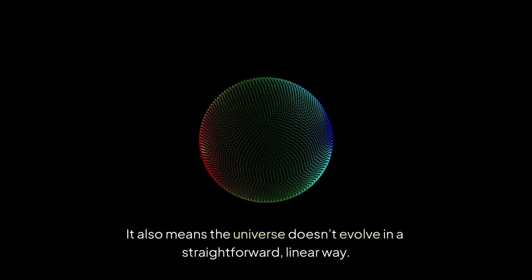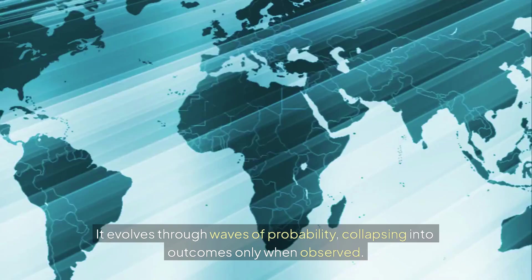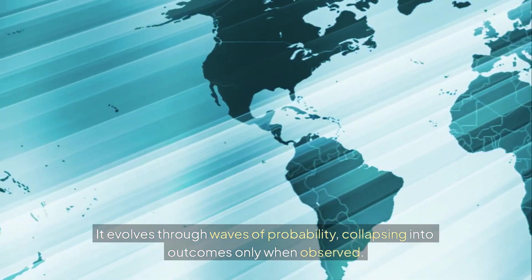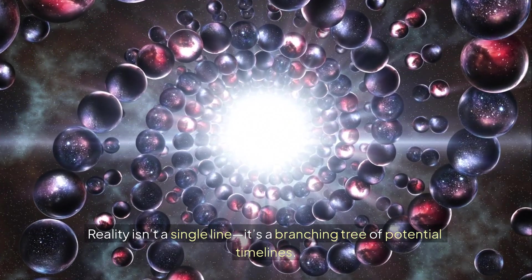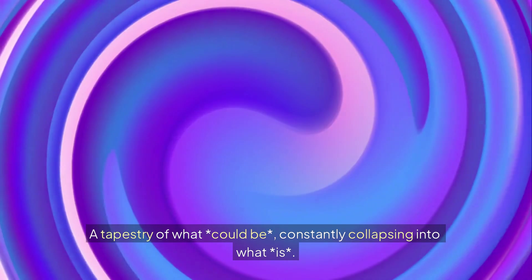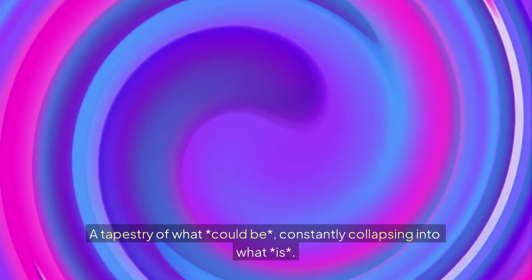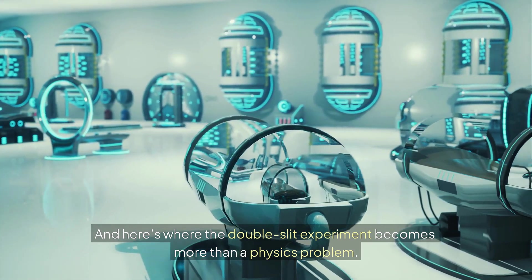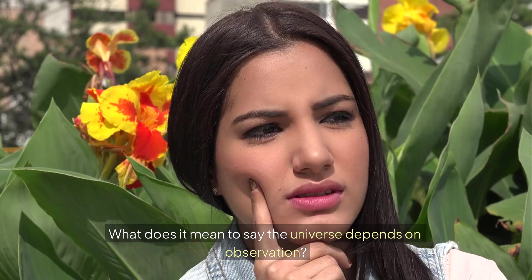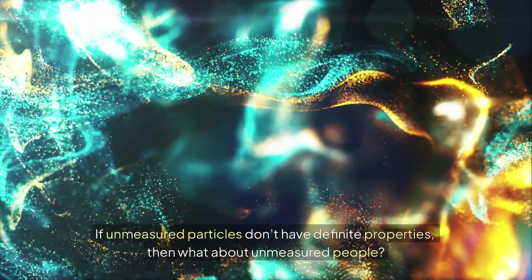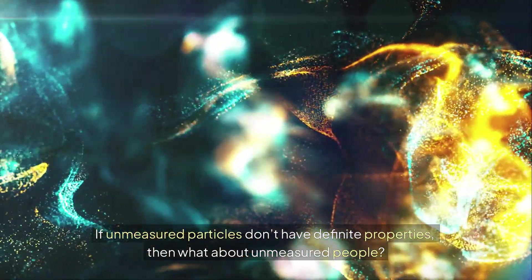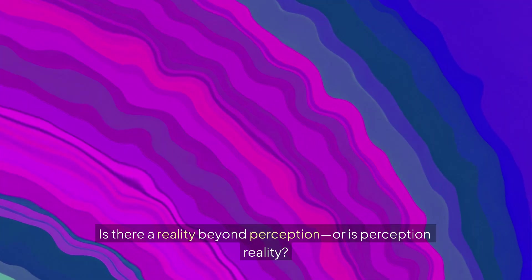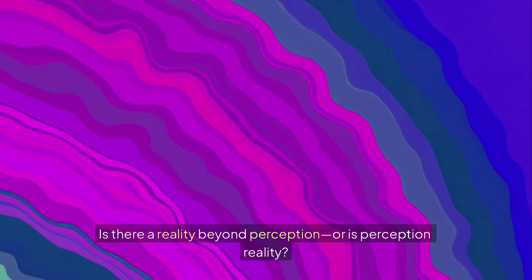It means the future isn't fixed. That possibility is fundamental. That uncertainty is not a bug but a law. It also means the universe doesn't evolve in a straightforward linear way. It evolves through waves of probability, collapsing into outcomes only when observed. Reality isn't a single line, it's a branching tree of potential timelines. A tapestry of what could be constantly collapsing into what is. And here's where the double slit experiment becomes more than a physics problem. It becomes a philosophical one.